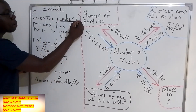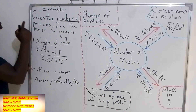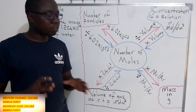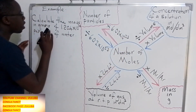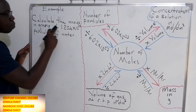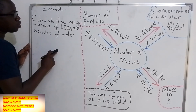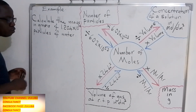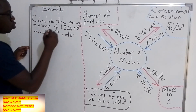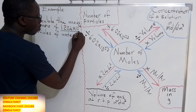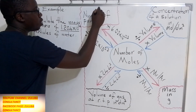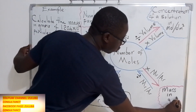When you have been given the number of particles, first convert the number of particles to the number of moles, then use those moles to calculate the mass. Let us use what we have here to answer this question. The question reads: calculate the mass in grams of 1.204 × 10²⁴ particles of water. We have been given the number of particles and asked to calculate the mass.